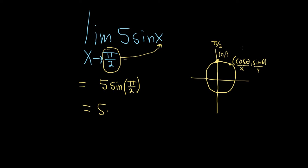So in this case, the y coordinate is 1. So that means that the sine of pi over 2 is equal to 1. So this will be 5 times 1, which is equal to 5. And that would be the answer.